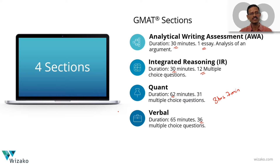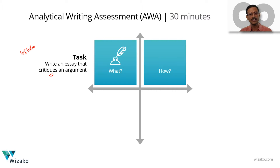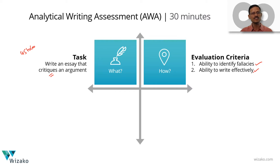Let's delve into each section, starting with AWA. The task is to write an essay that critiques an argument. You'll be presented with an argument of about 45 to 60 words and must identify the fallacy in its reasoning and write an essay critiquing it. You are evaluated on two aspects: first, whether you can identify the fallacy — which means you need to know the structure of a good argument — and second, whether you're able to write effectively, communicating in language that adheres to the standard rules of written English.